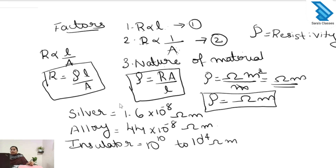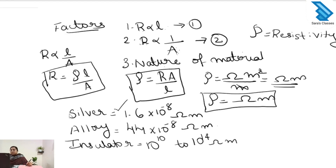Looking at these values, silver has the lowest resistivity. The material with lower resistivity is a good conductor. From these three, we can see that silver is the good conductor of electricity.